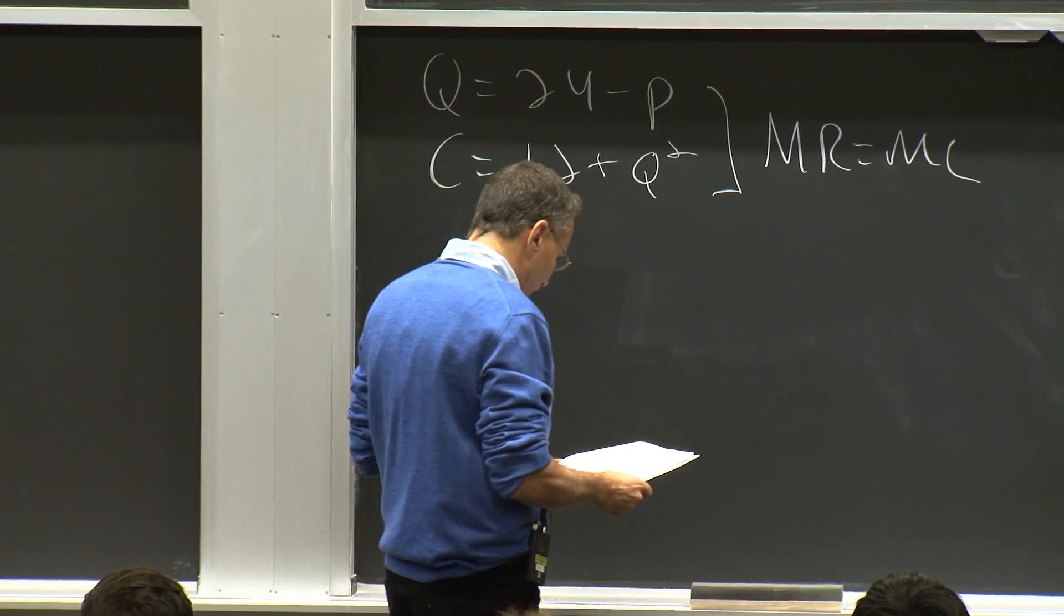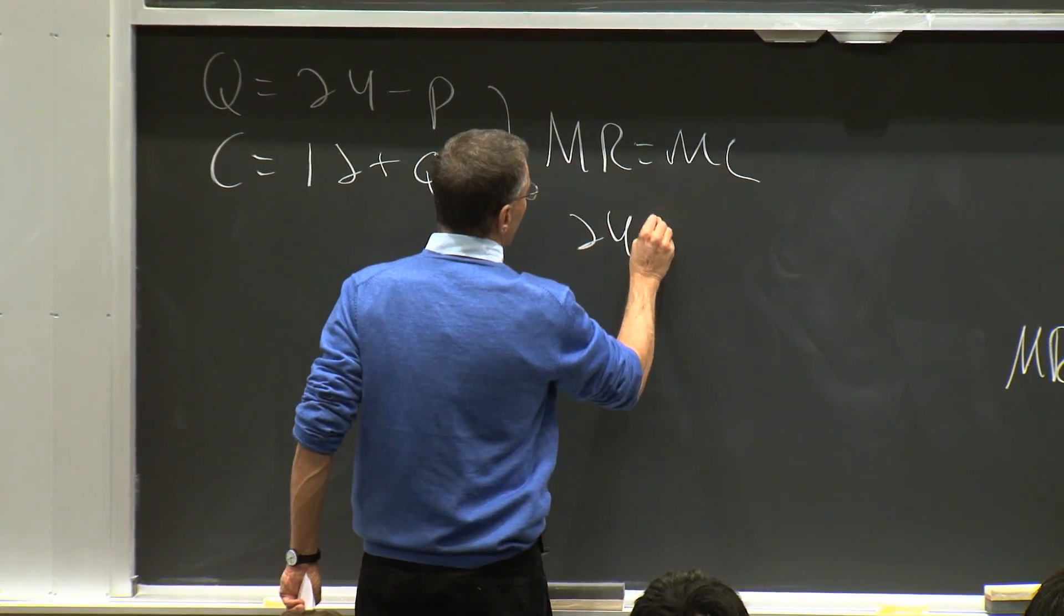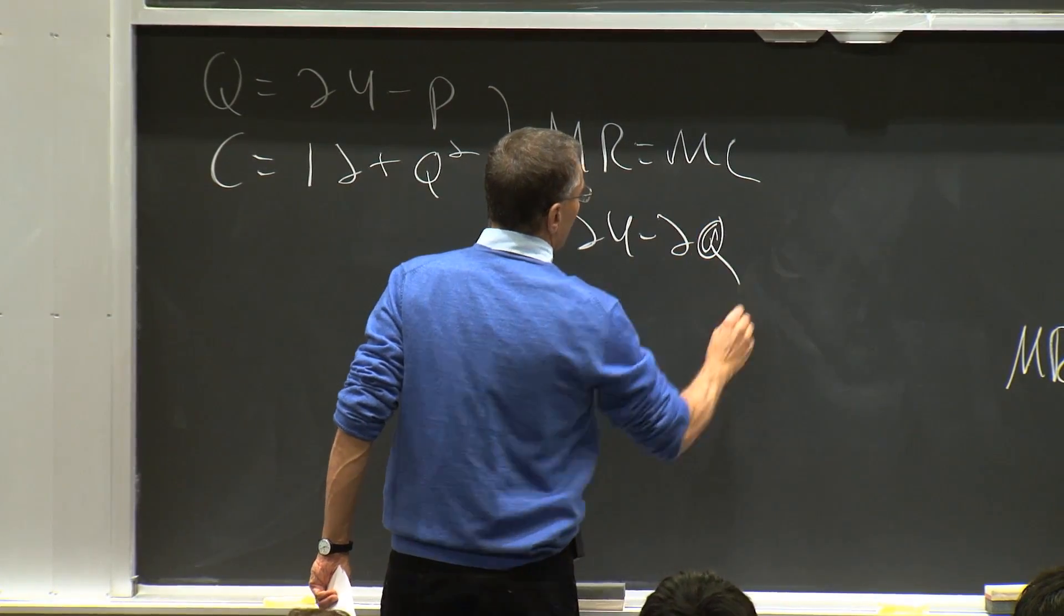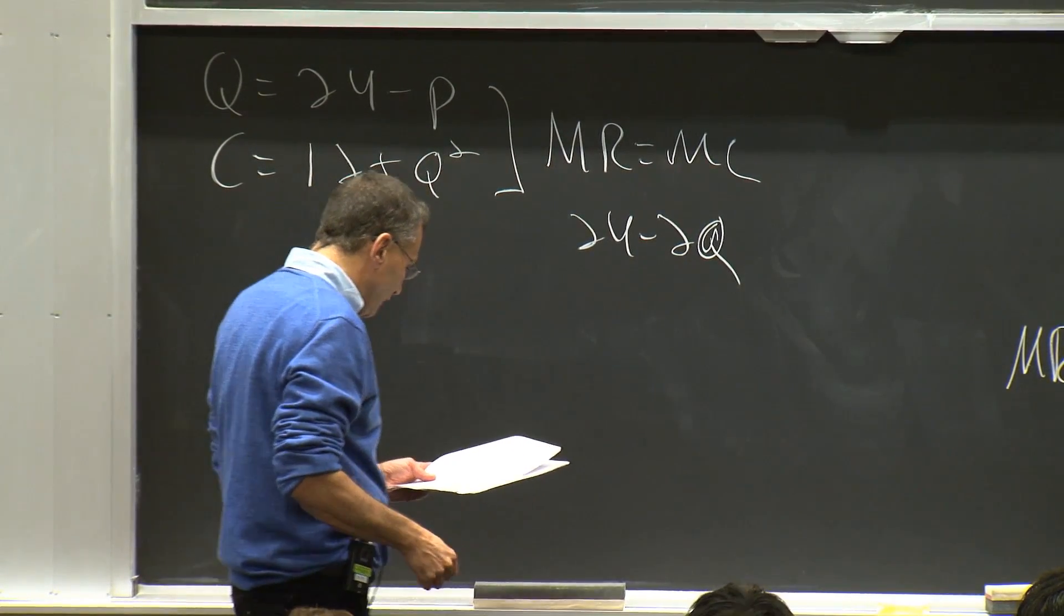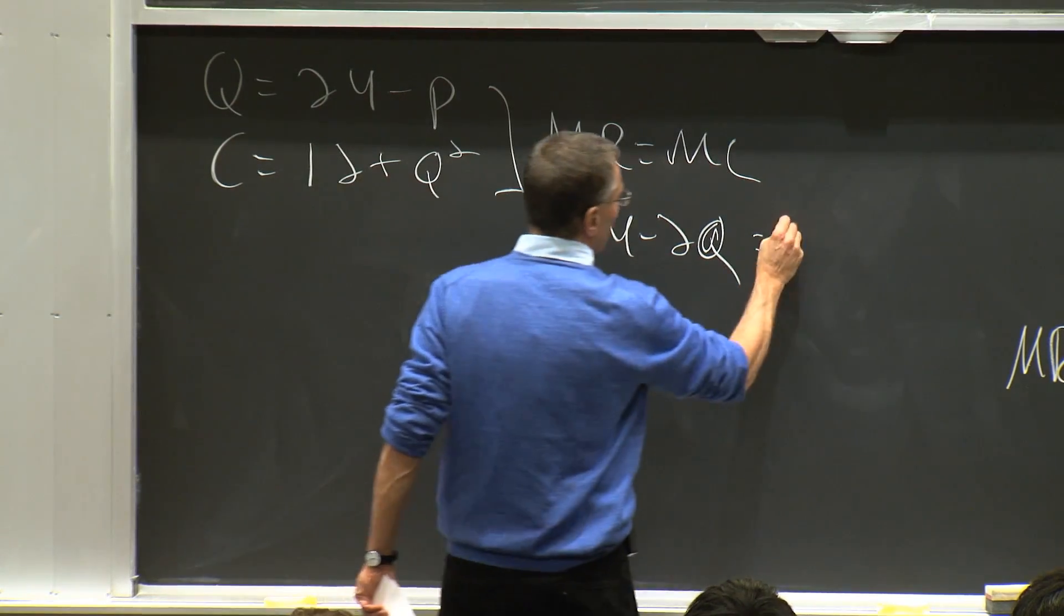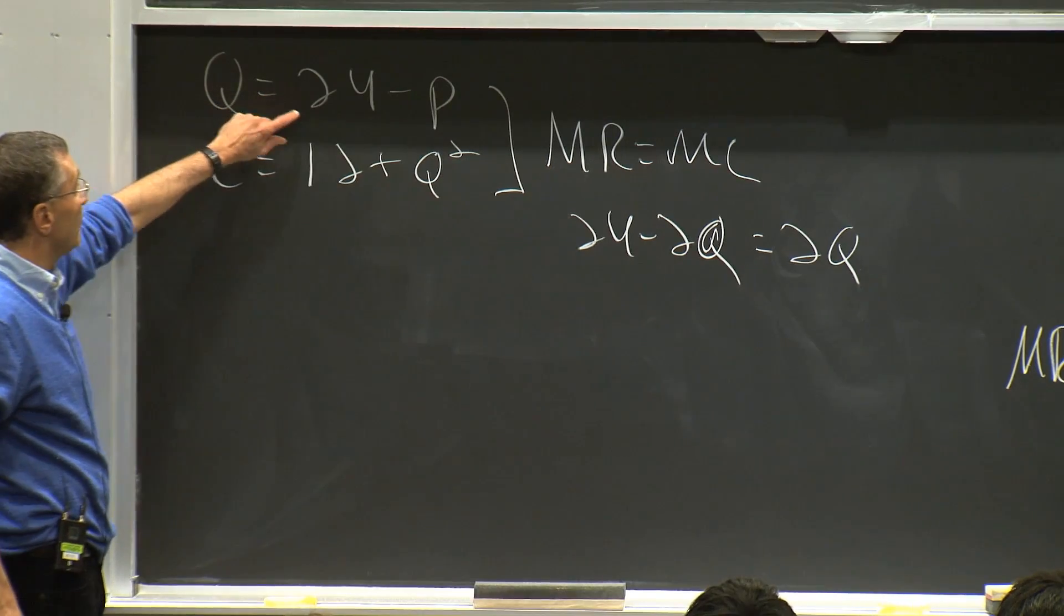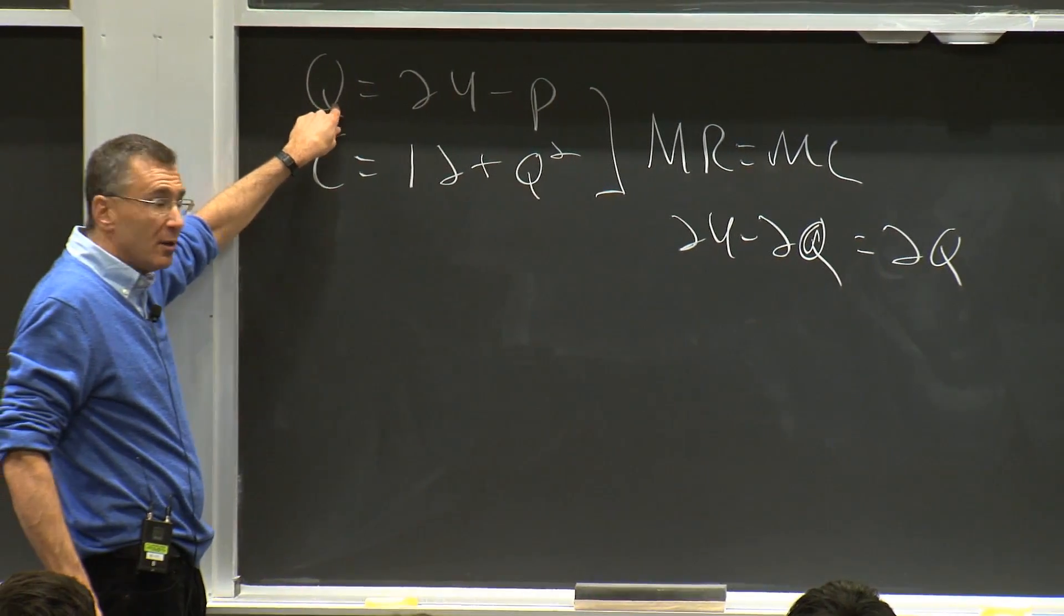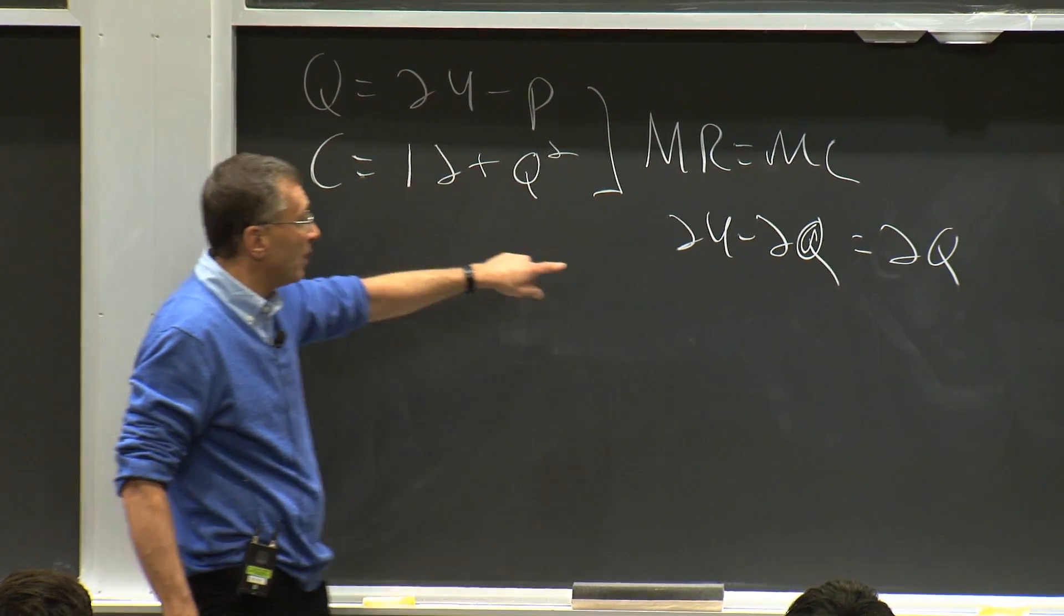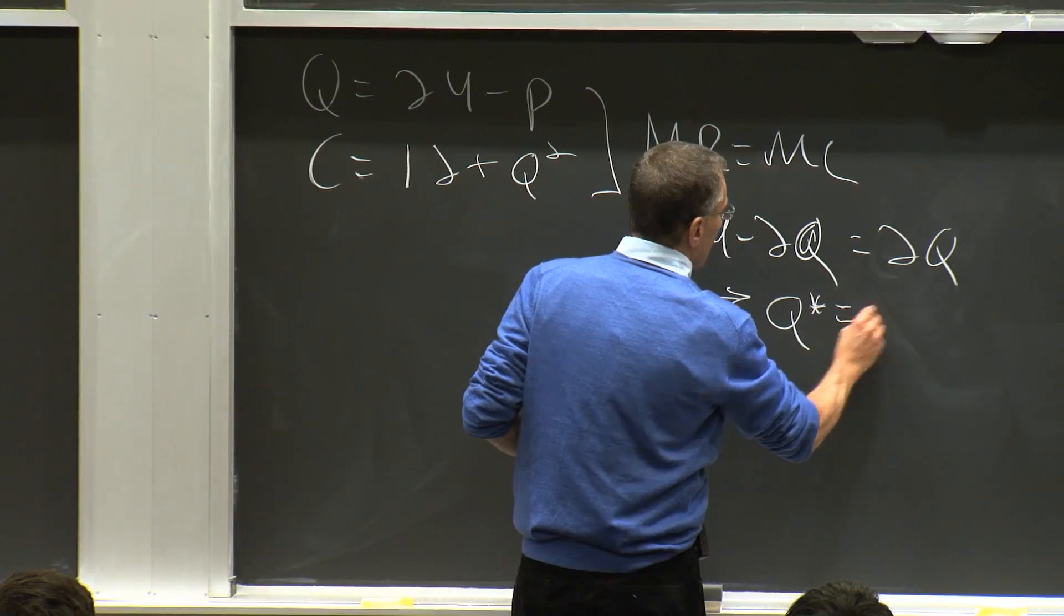Marginal revenue, in this case, is 24 minus 2q. Marginal cost, in this case, is what? 2q. I just inverted that and differentiated it. I differentiated that. So 24 minus 2q equals 2q. Therefore, q star equals 6. The monopolist is going to produce 6 units.